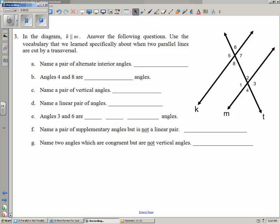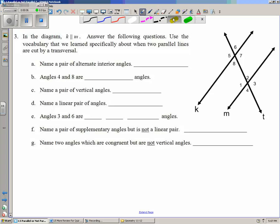In the diagram, K is parallel to M. Remember that two straight up and down lines like this is the symbol for parallel. Answer the following questions. Use the vocabulary that we learned specifically about when two parallel lines are cut by a transversal.